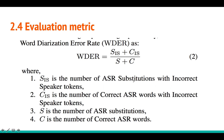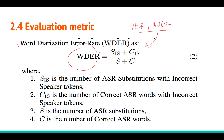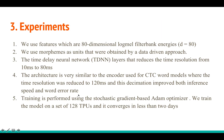The evaluation metric they use is called Word Diarization Error Rate, or WDER. Since they are training a joint model, they can make both DER and WER errors, so WDER combines them into a single metric. I am running out of time so I will just skip the detailed equation.